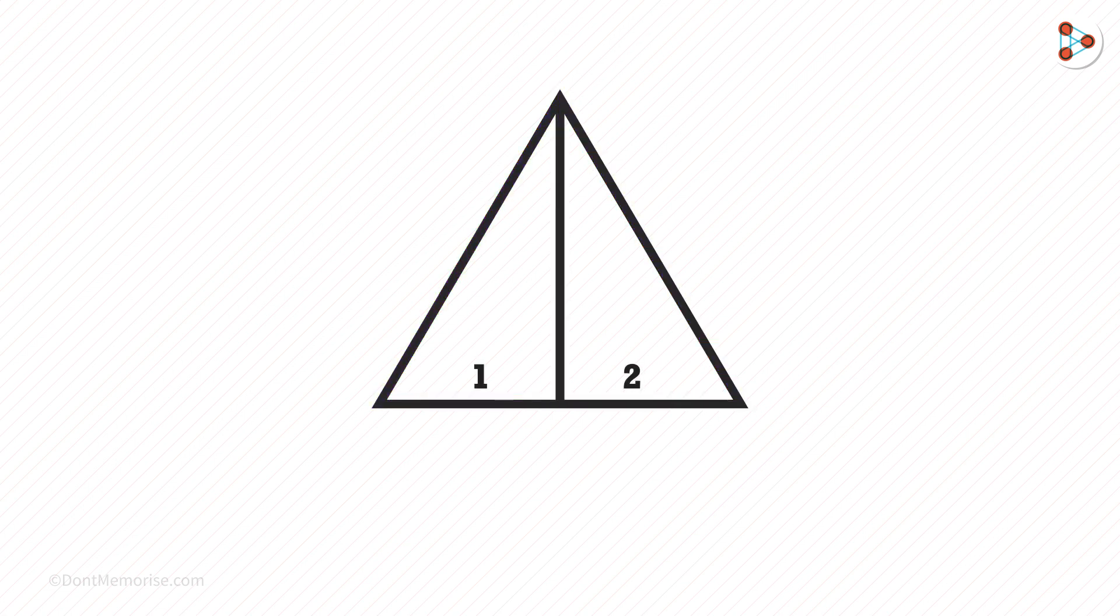So what is the total number of triangles here? Don't make the mistake of saying 2. Here this is the first triangle, this is the second one, and this is the third one. So in totality, there are three triangles.